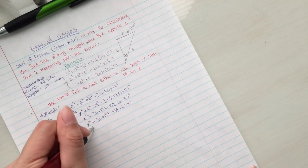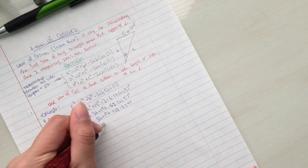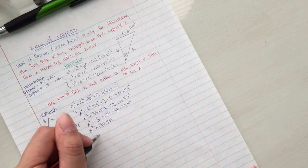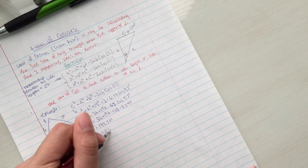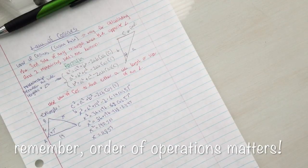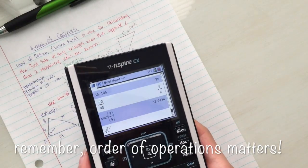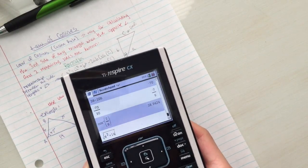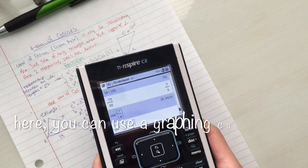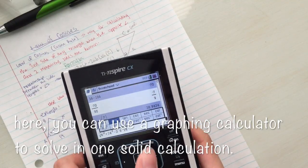You will get 36 plus 196 minus 168 times 0.545 equals x squared. You first multiply negative 168 times the cosine of 57, which is 0.545, and then you add 36 plus 196 to get x squared equals 140.501.